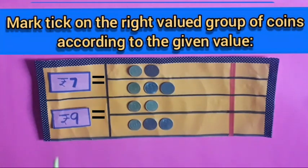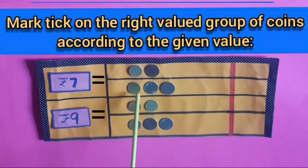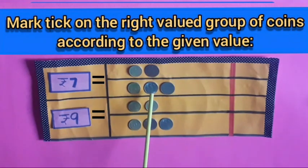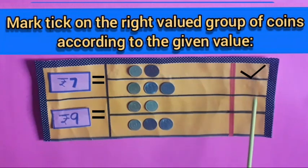Now tell me kids, what is it written? Yes, it is written rupees 7. Let's see the value of which coins is equal to the value of rupees 7. Count with me: 5 rupees, 5 and 2 — 7 rupees. The value of these coins is equal to the value of rupees 7. Now we will mark tick on it.